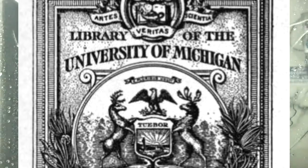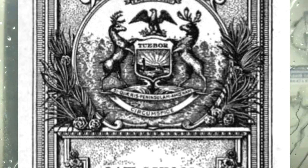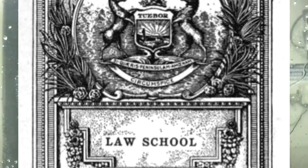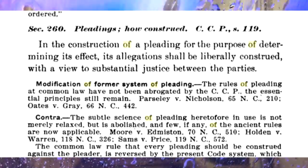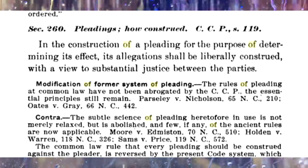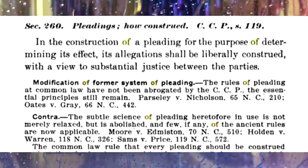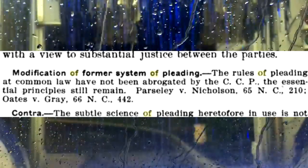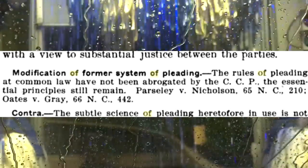If you're moving under the civil code of procedure, you're not moving under a common law action and so the common law forms of rights do not apply to that case. One of the reasons I'm going over this old code book is because when they first started codifying the law, literally what they were doing was codifying the common law. In the construction of a pleading, its allegations shall be liberally construed with a view to substantial justice between the parties — meaning they are to liberally construe it and be fair and unbiased in their rulings.